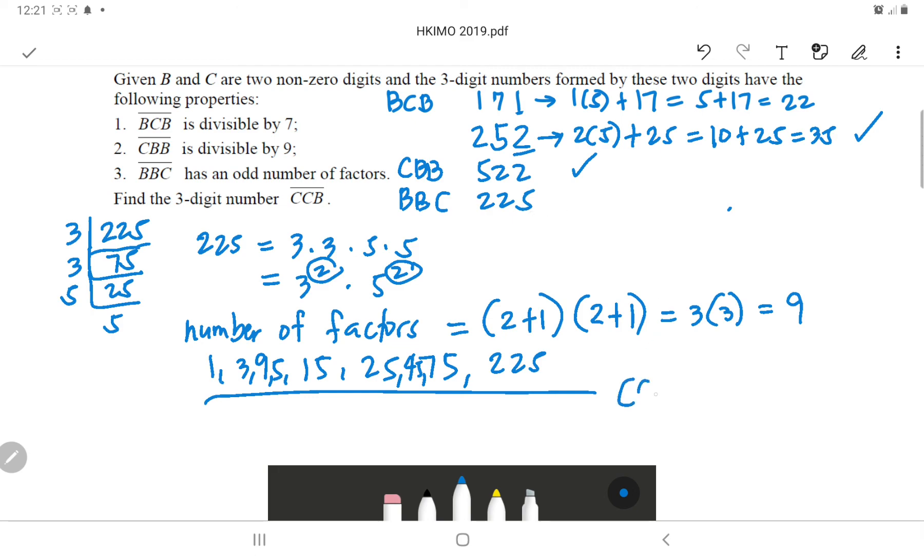So meaning the CCB is, C is 5, and then another C, 5, B is 2. So the 3-digit number CCB is 552.